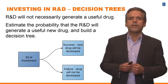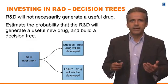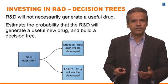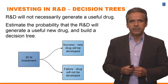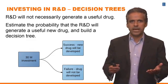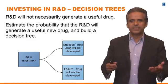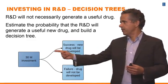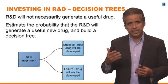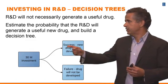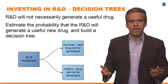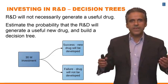How would we model this? The first thing to notice is that the R&D is not necessarily going to generate a useful drug. Sometimes research projects work; sometimes they don't and you end up with nothing. The way we're going to think about this is by using a decision tree. Today you decide whether to spend 30 million dollars in research. There is a chance you're going to develop a new drug, but there is also a chance of failure — your research produces nothing and no drug is developed.